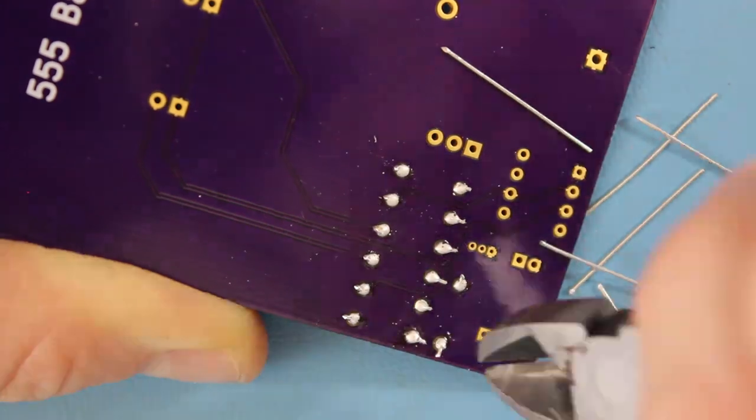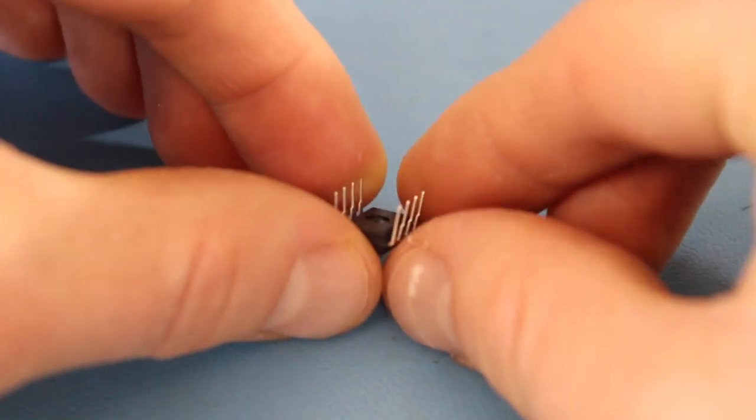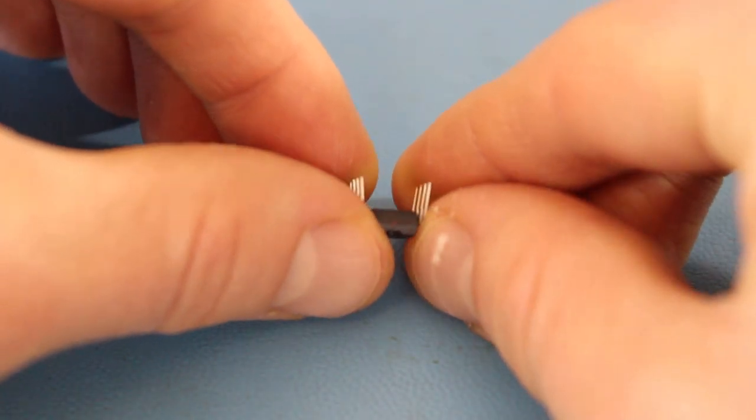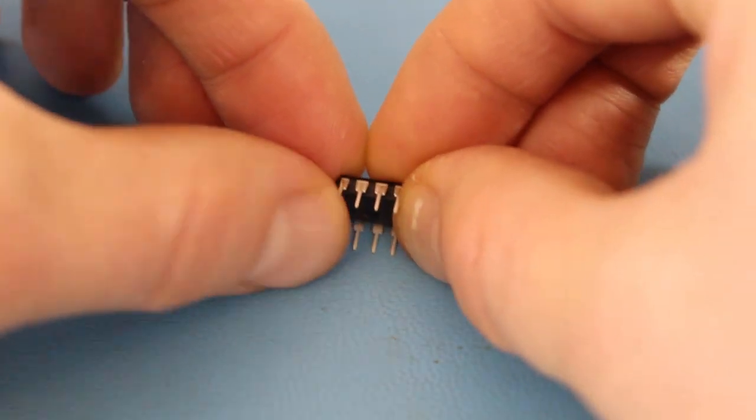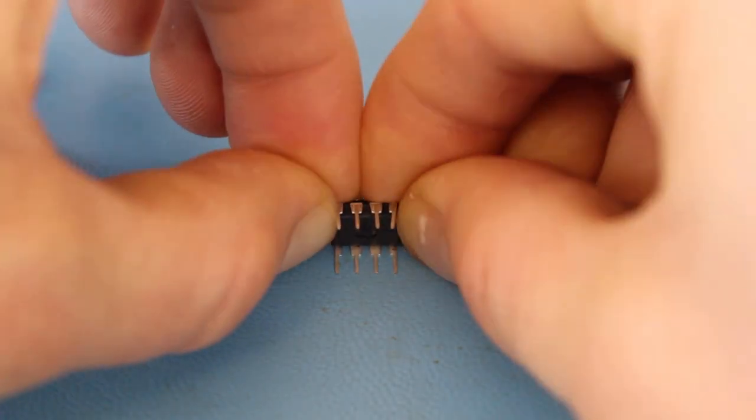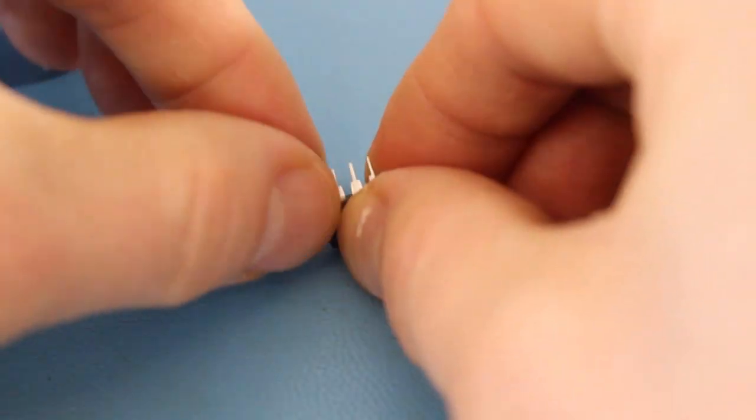I like to do the 7555 chip next. You might have to bend the leads to get it to fit. My trick for this is to rest the chip on its side on a hard surface and then slowly rotate it to bend all the leads at once.